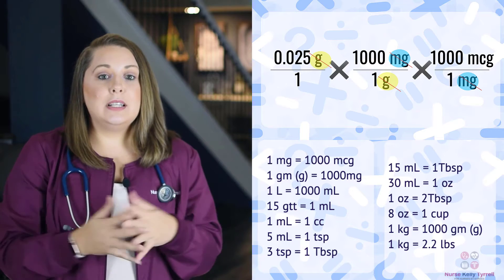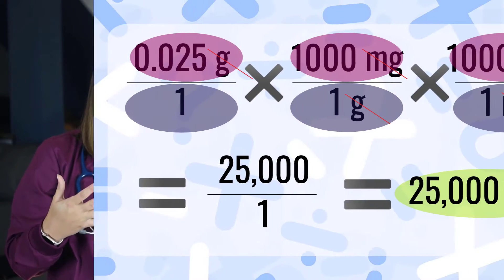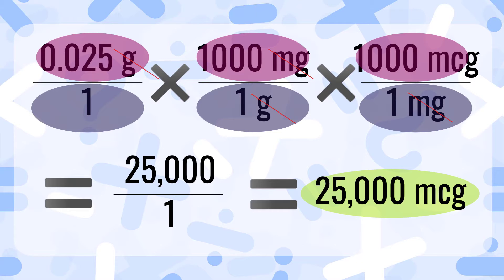Now let's solve this problem. First, multiply all the numbers on the top and then all the numbers on the bottom. On the top: 0.025 times 1000 times 1000 equals 25,000. On the bottom: 1 times 1 times 1 equals 1. Our last step is to divide: 25,000 divided by 1 equals 25,000 micrograms.